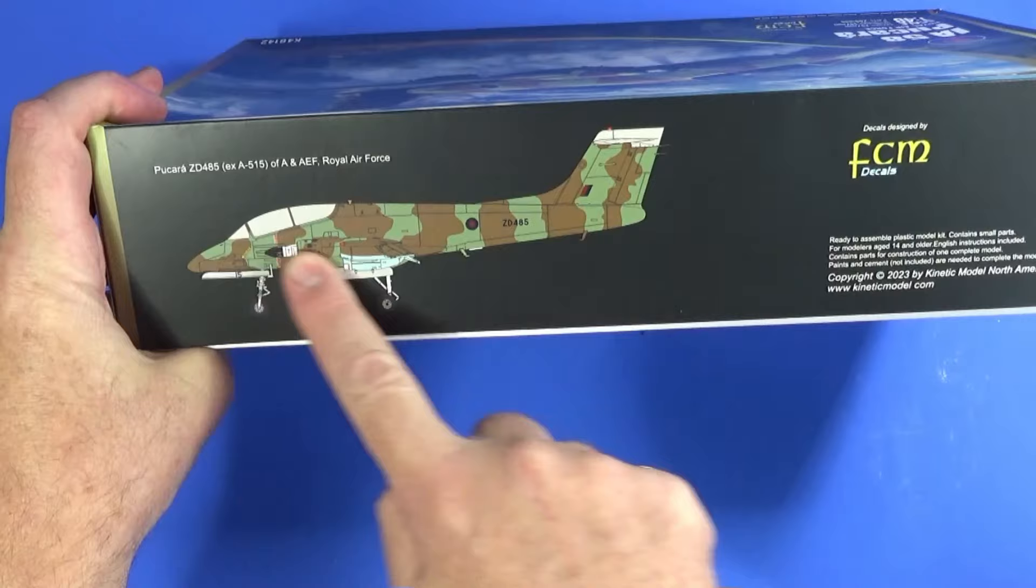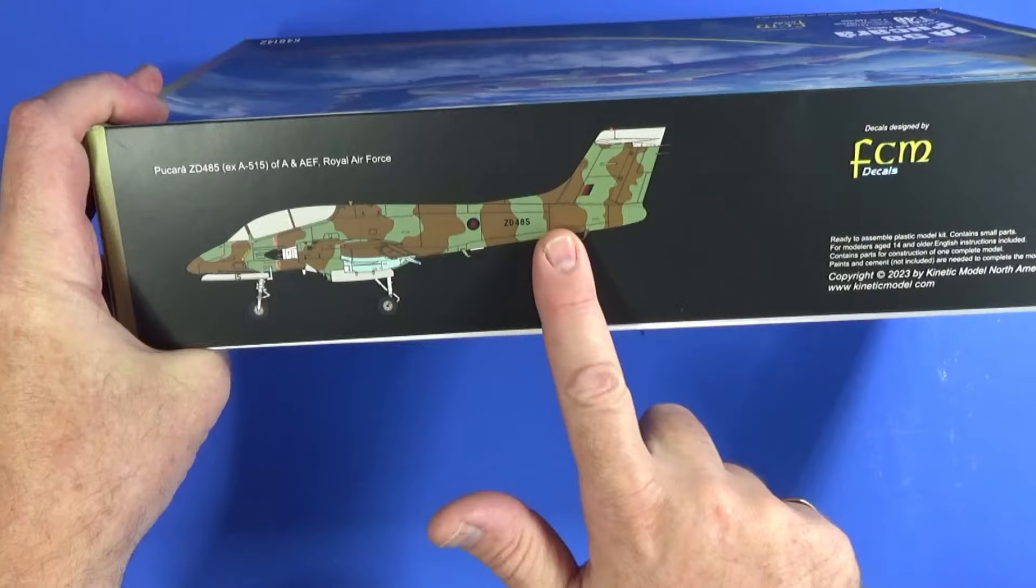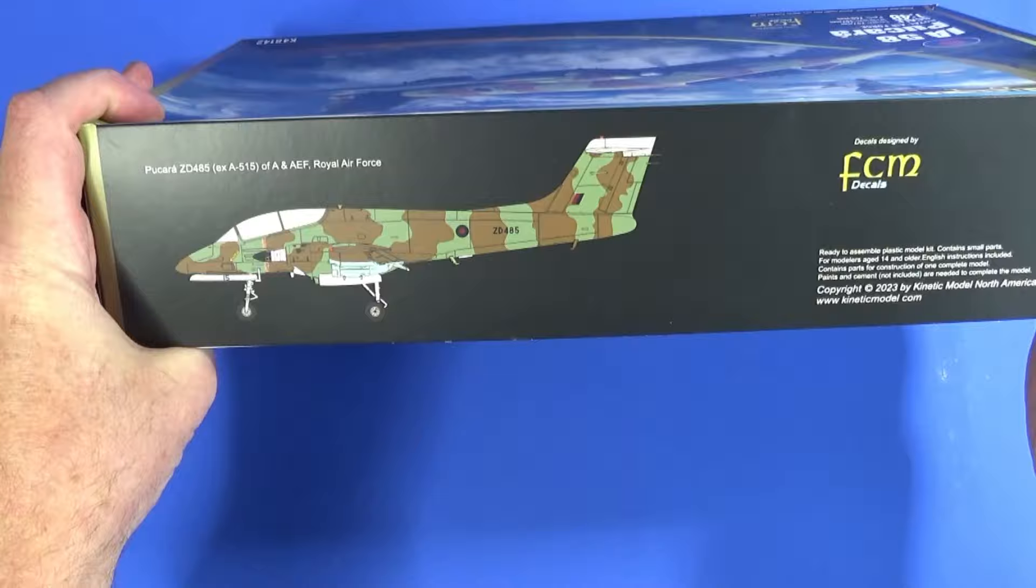And the other long side has the side elevation view of the aircraft Zulu Delta 485, what its camouflage looks like. Just a few little bits and pieces here, a copyright notice of 2023.